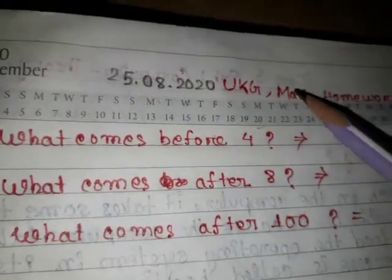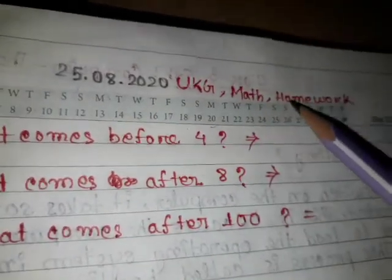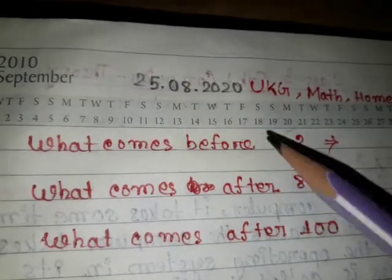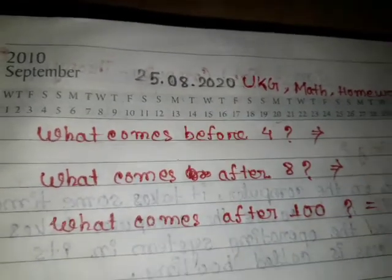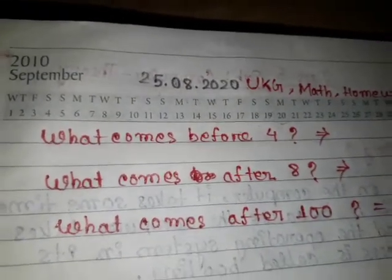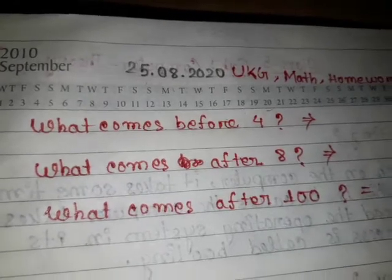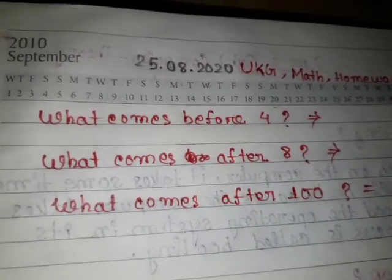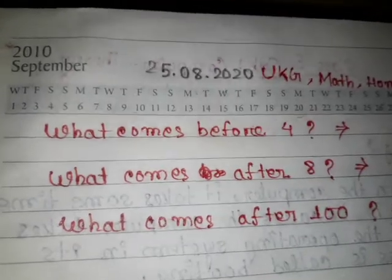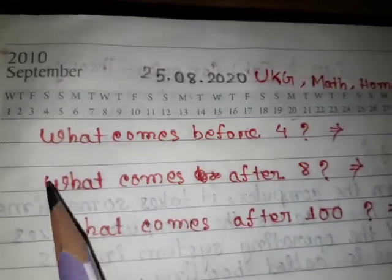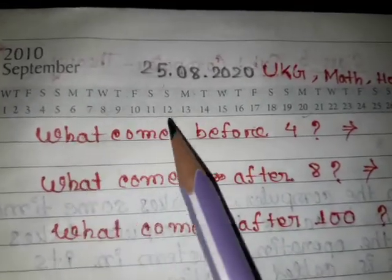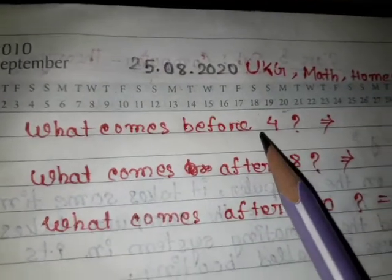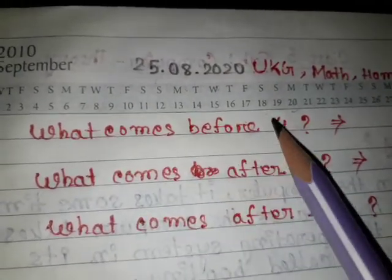UKG subject math homework, 25 August 2020. Good morning students, this is our homework class. Let's start our class. The first question is: what comes before four? We know before means...